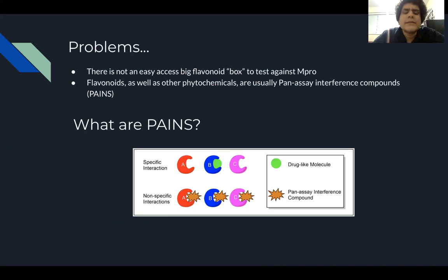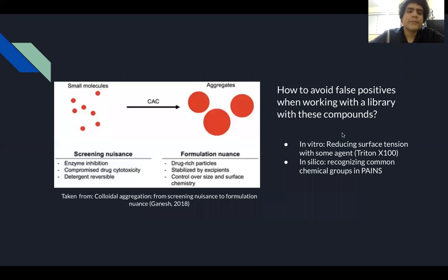But what are PAINs? PAINs are compounds that establish non-specific interactions with the proteins you want to inhibit. And thus, they lead to false positives. The mechanisms of how these PAINs form these non-specific interactions are multiple. But for flavonoids, there is one most important mechanism and that is the formation of colloidal aggregates.